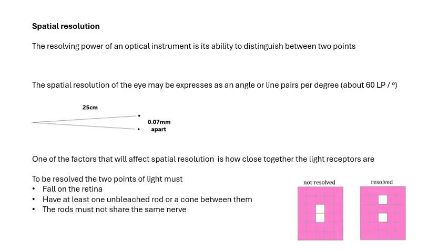One of the factors which will affect spatial resolution is how close together the light receptors are. For two points to be resolved, the light must fall on the retina and in between the image of the two points there needs to be a gap. You must have at least one unbleached rod or a cone between them. If we look at these diagrams here, there isn't a gap between them here. Between these two points there must either be a cone or an unbleached rod. The rods mustn't share the same nerve because then they'll just be sending the same signal.